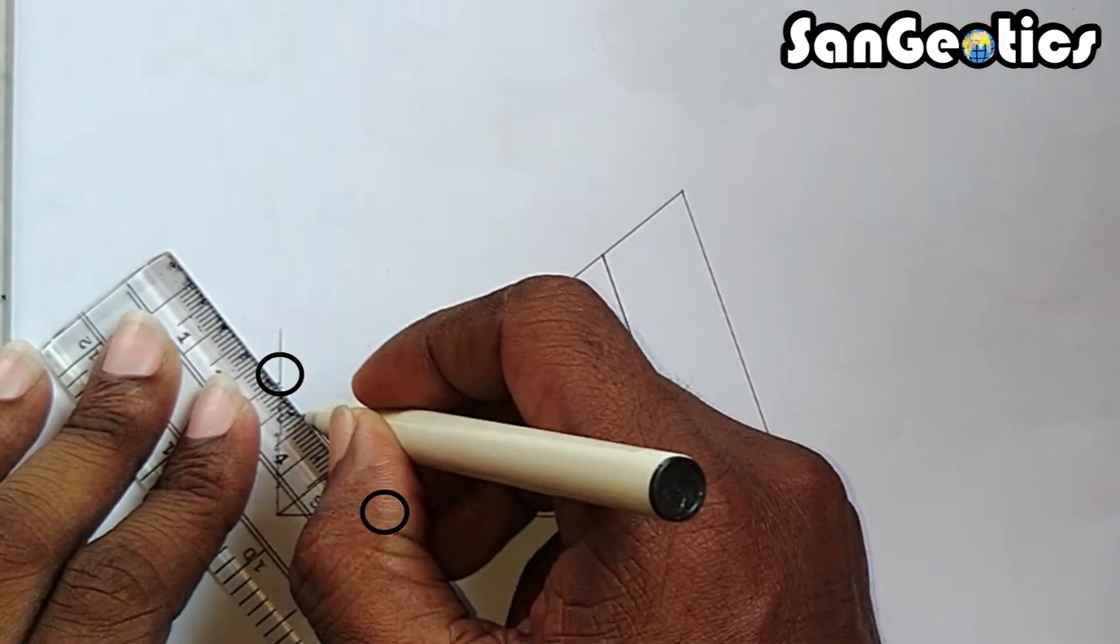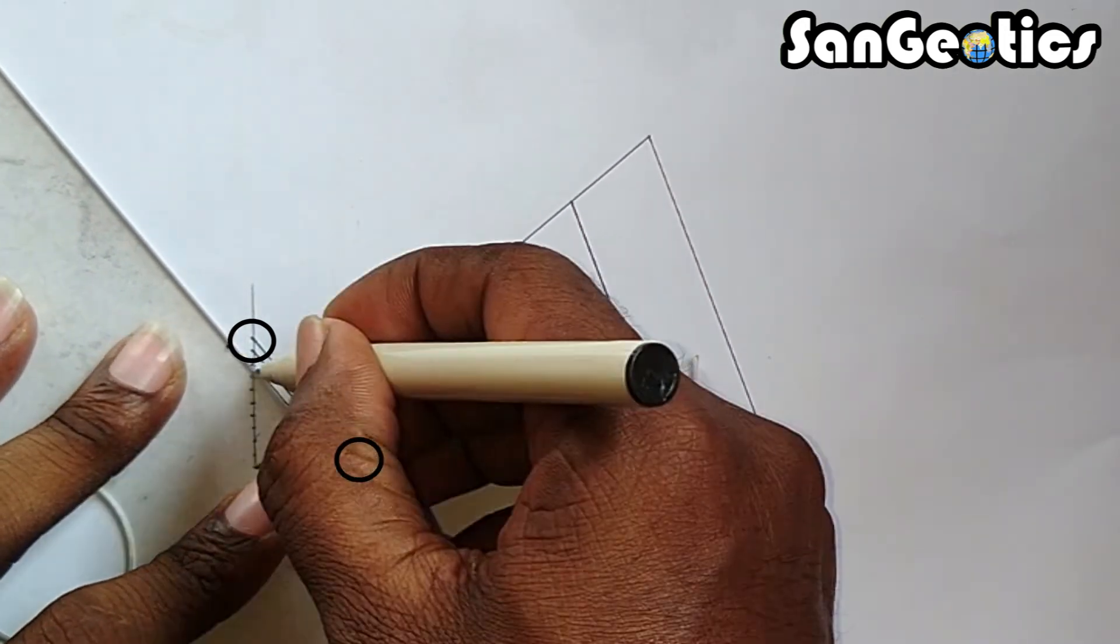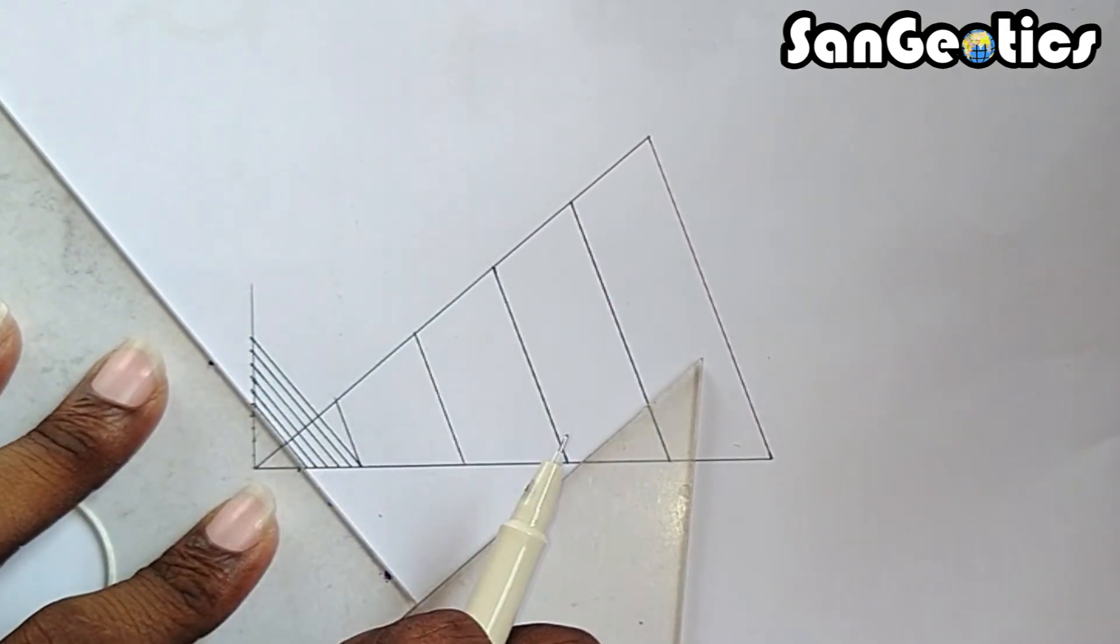And join these two points, and draw another 9 parallel lines with the help of set square.